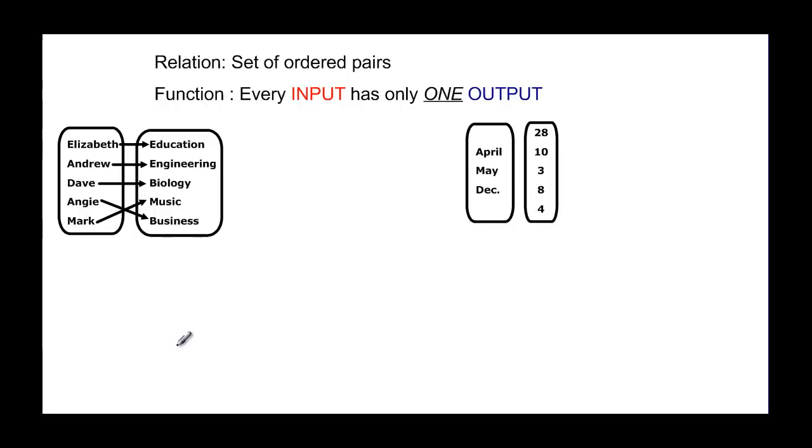A function is every input has only one output. It's a relation because they're ordered pairs.